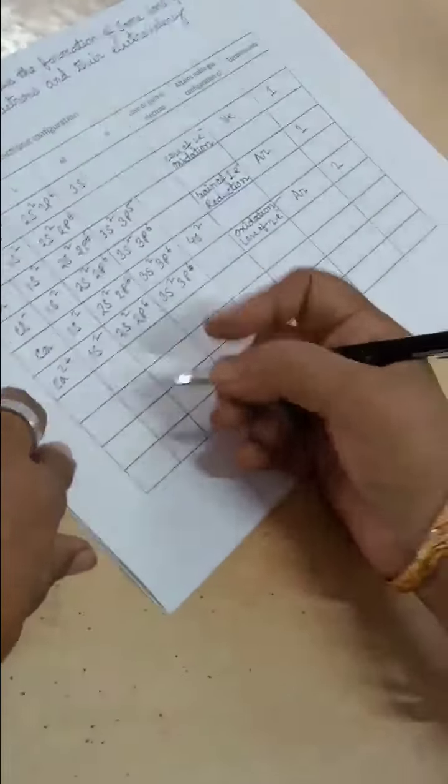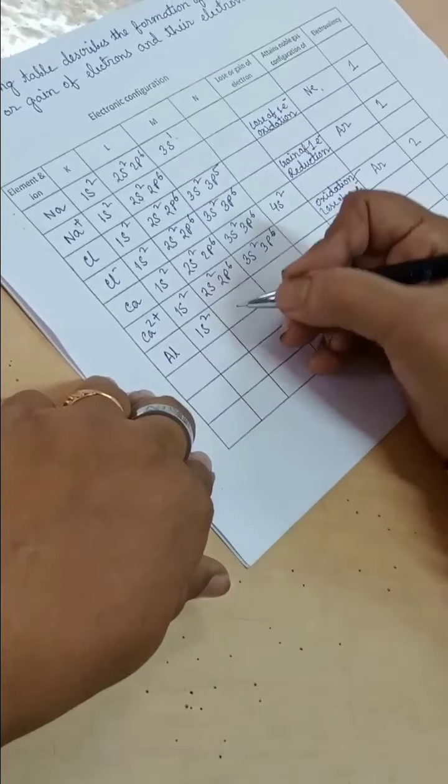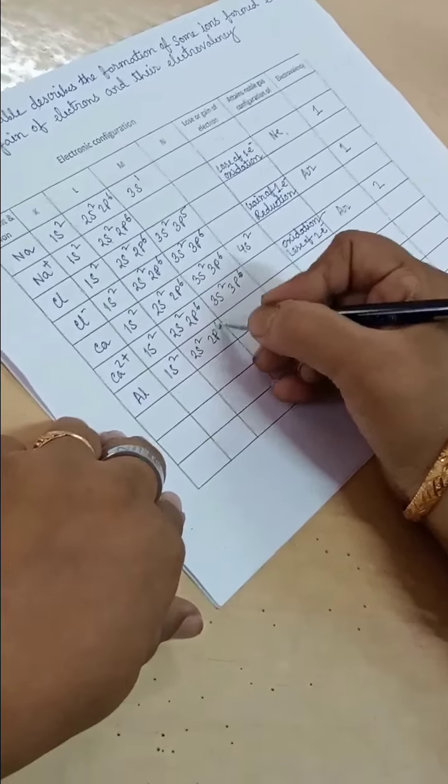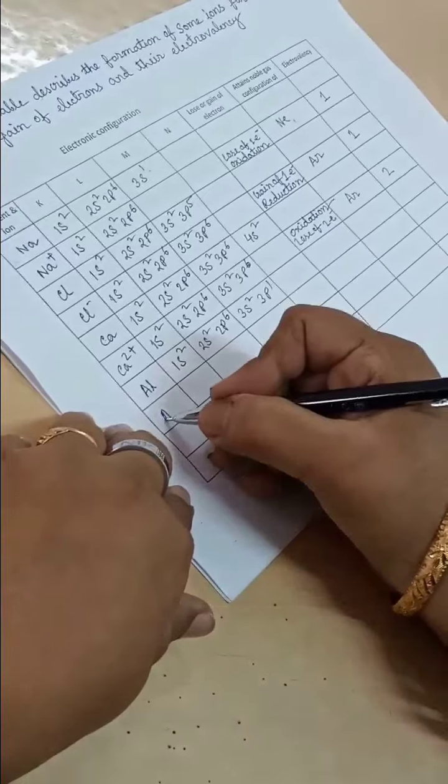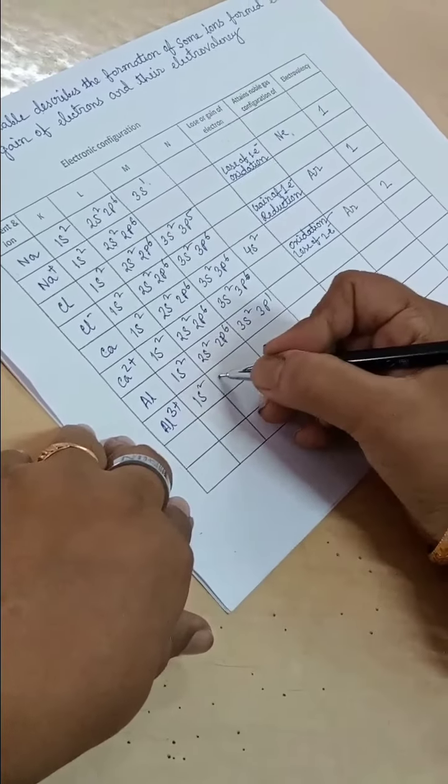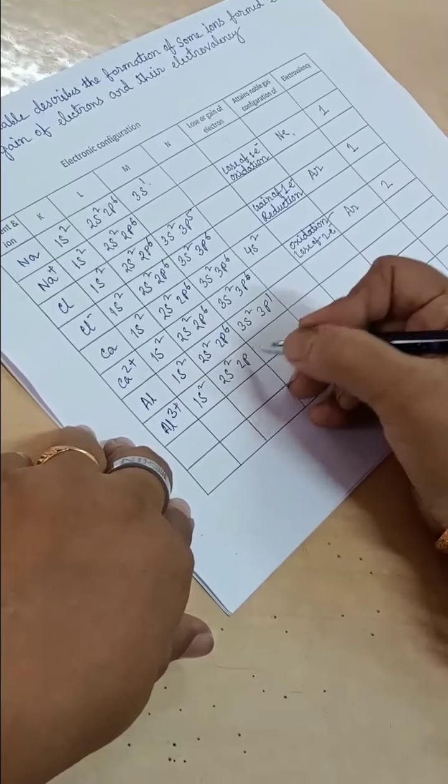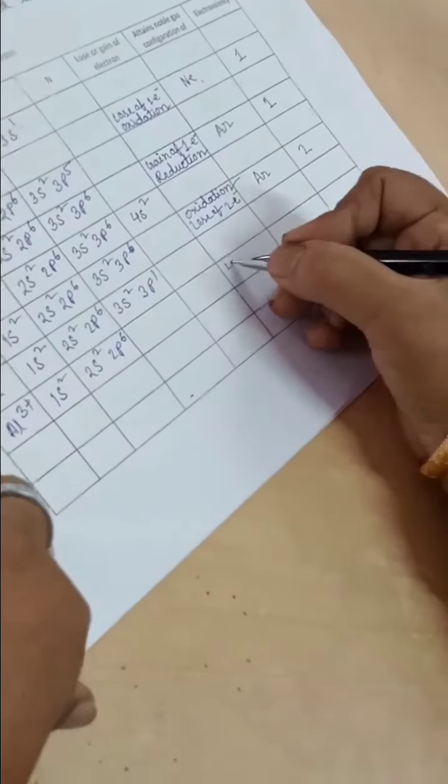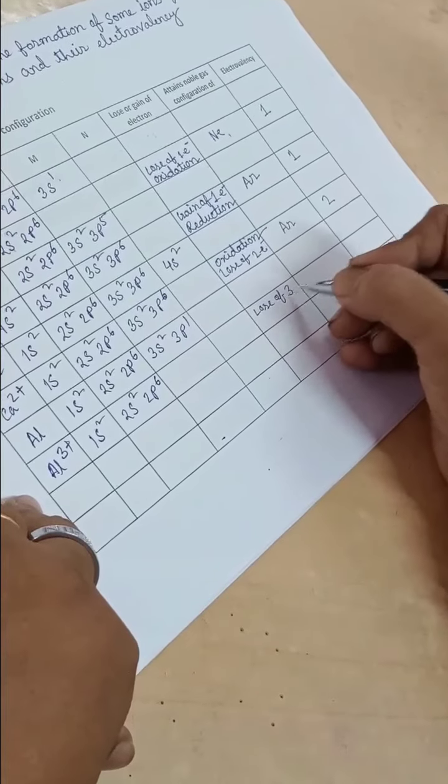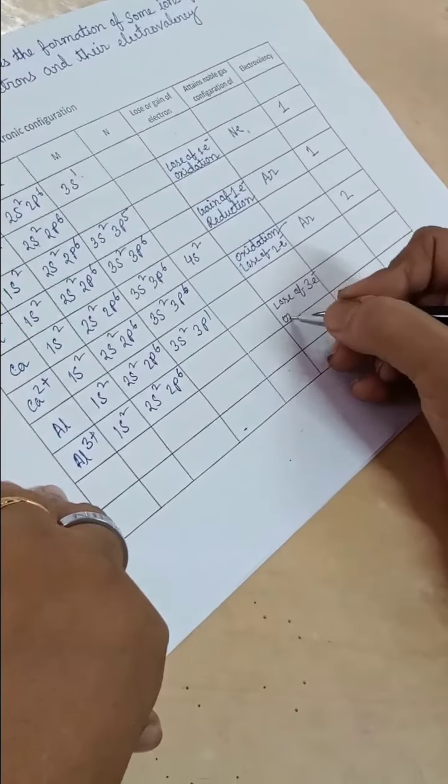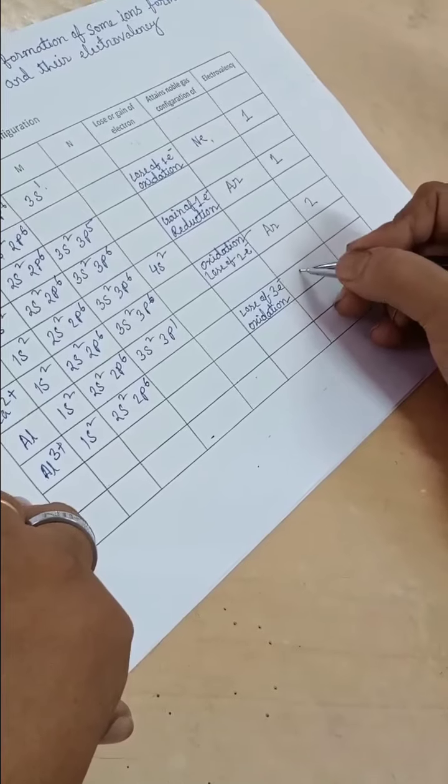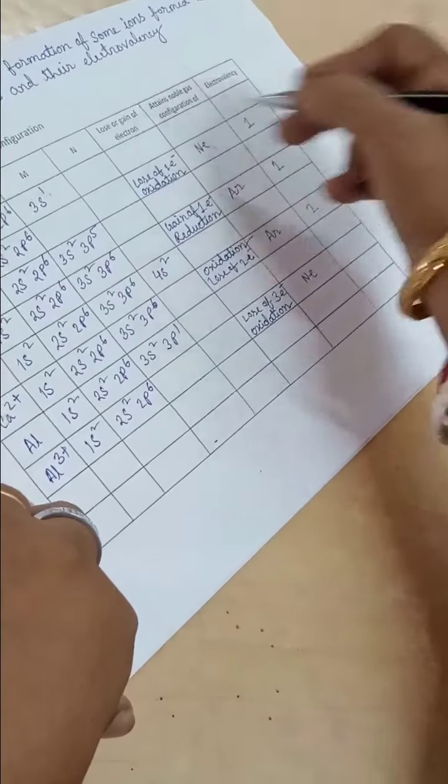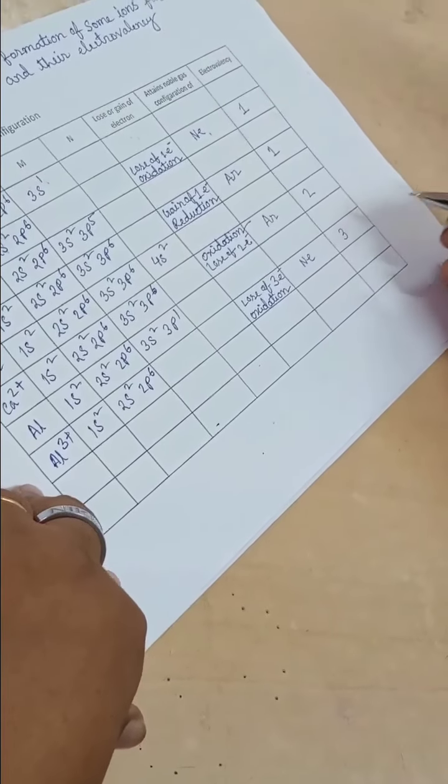Aluminum: 1s2, 2s2, 2p6, 3s2, 3p1. Aluminum 3+: 1s2, 2s2, 2p6. Loss of 3 electrons, oxidation, attains noble gas configuration of neon, electrovalency 3.